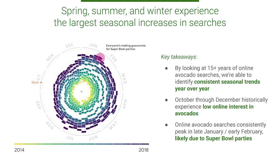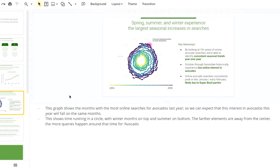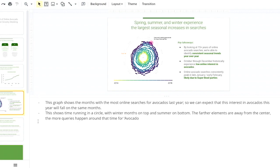You might remember we talked about telling a story with data before. You can think of this like outlining the narrative. We can do the same thing with our data viz examples. If we're showing a visual graph of annual searches for avocados, we might want to frame it by saying: this graph shows the months with the most online searches for avocados last year, so we can expect that interest in avocados will fall on the same months this year. That can even be used in our speaker notes for this slide — a great place to add important points you want to remember during the presentation. These notes aren't visible to your audience in presentation mode, so they're great reminders you can refer to as you present.